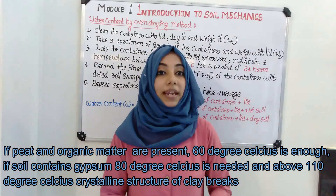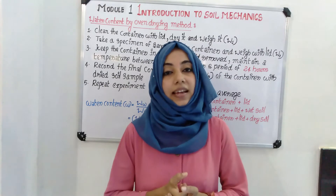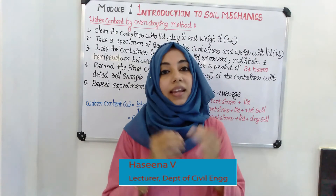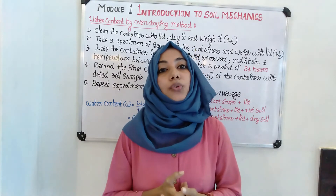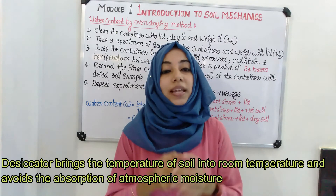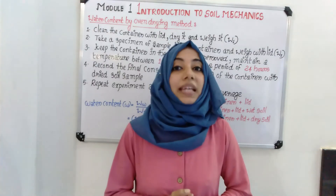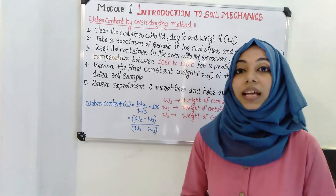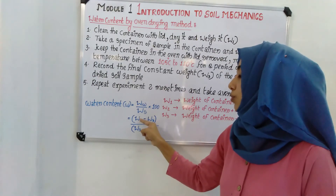We therefore use a temperature range of 105°C to 110°C. After 24 hours, take the container from the oven and record the constant weight, termed as W3, which is the weight of the container plus dry soil sample. The weight is taken after the specimen is cooled using a desiccator, which brings the temperature to room temperature and helps avoid absorption of atmospheric moisture.